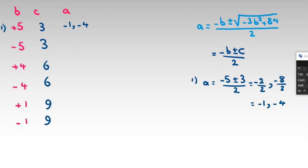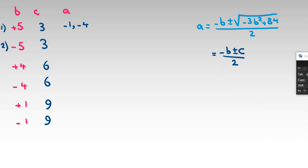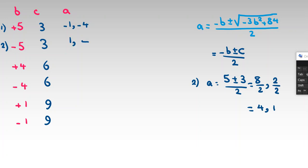Case 2: b = negative 5, c = 3. Then a = (5 ± 3) / 2. That gives (5 + 3) / 2 = 4, and (5 minus 3) / 2 = 1. So a = 4 or 1.